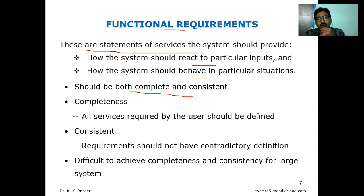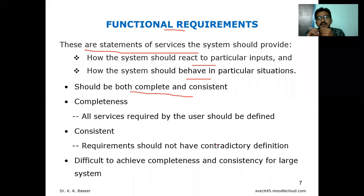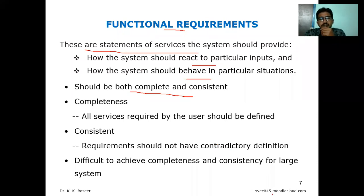Completeness means all the user requirements, whatever the user has said, all have to be covered — then it is called complete. If there are no contradictions or confusions in the requirement, then it is called consistent. However, achieving both completeness and consistency at any time is very difficult, especially for large systems — that is also a major problem.